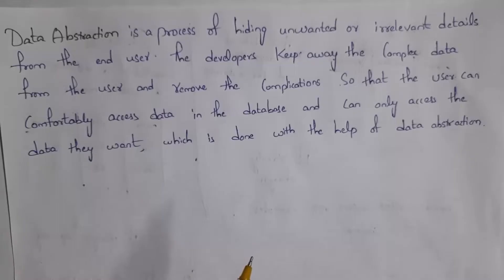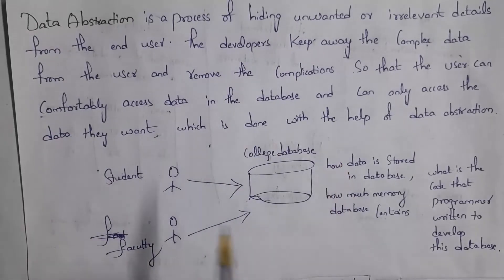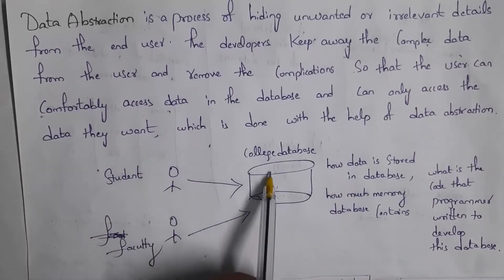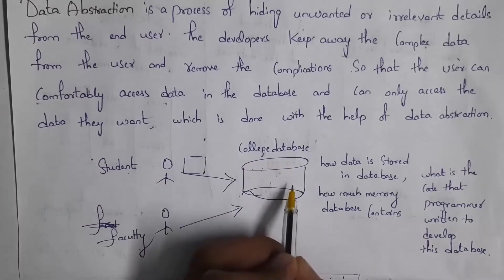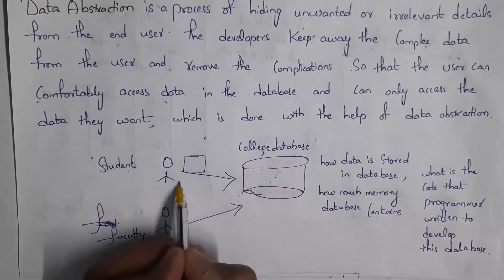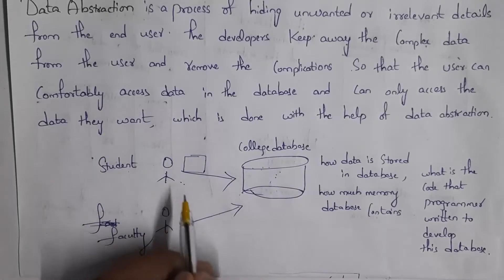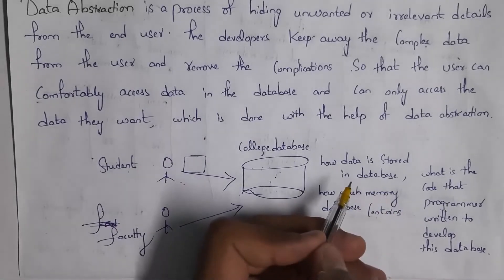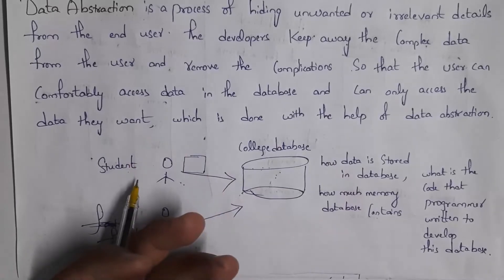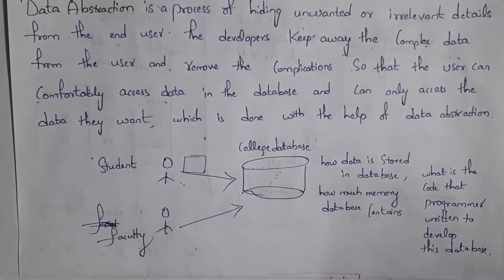I will give one example so that you can clearly understand what is data abstraction. For example, let us consider a college database. Normally, a student will access the college database and as well as faculty will access the college database. Whenever a student opens this college database, it will display only student information — like student course, student marks, attendance, and so on — but it will not display faculty information to the student, how data is stored in the database, what code the programs are written in, or how much memory the database contains.